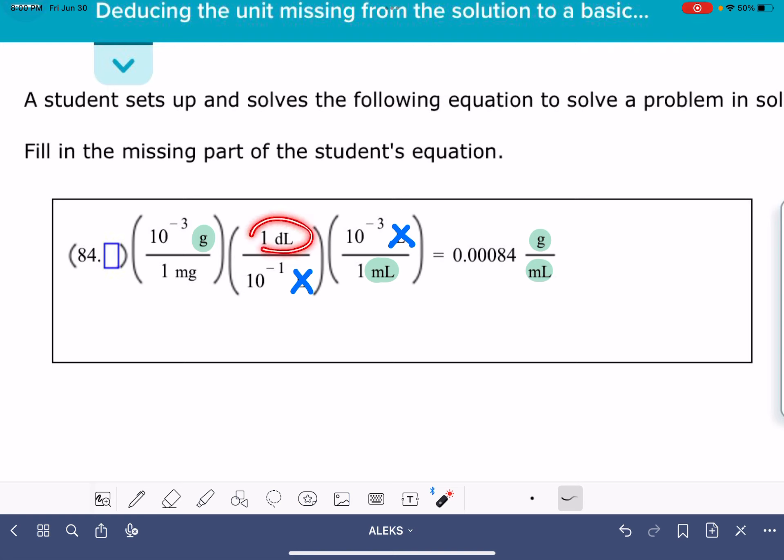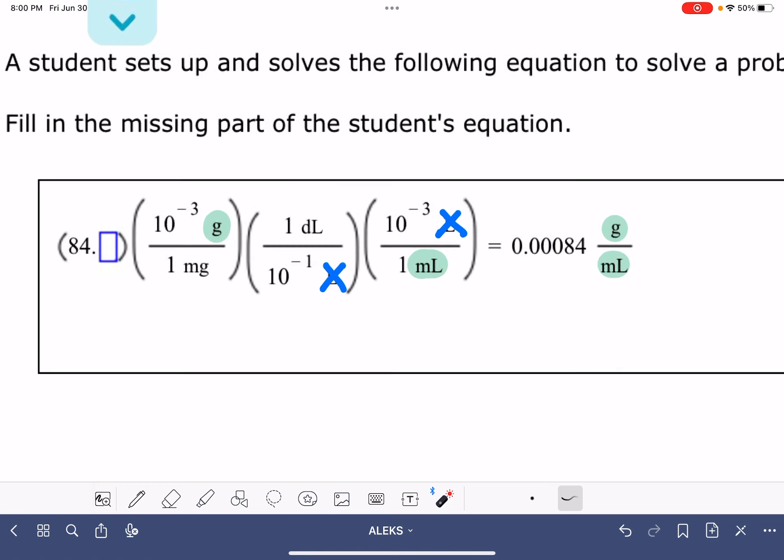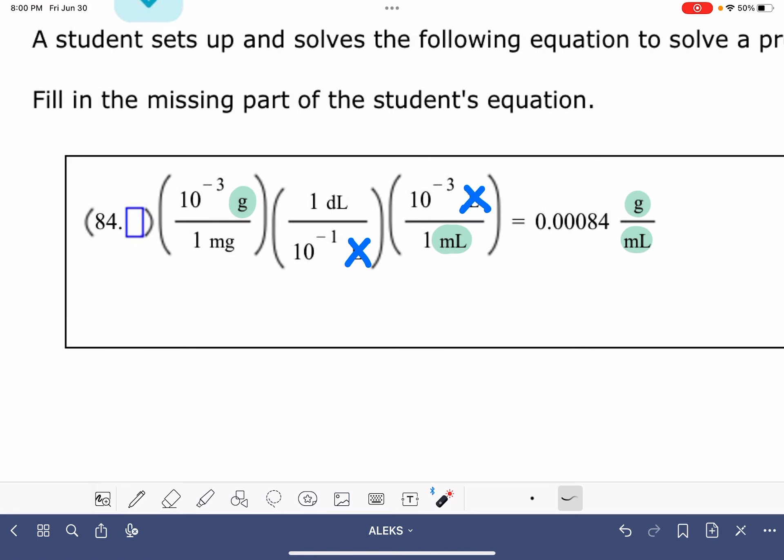Now these units are the ones that we need to worry about. These units, not important. They need to be canceled out. They need to go away. We need to add units here in this spot such that the milligram unit will cancel and the deciliter unit will cancel as well. I don't quite have enough room right here, so I'm actually just going to write it underneath in this spot right here.